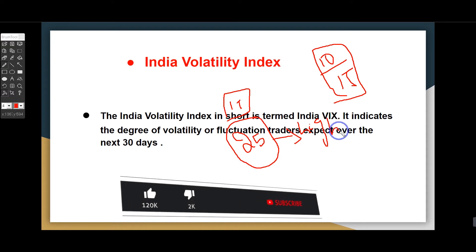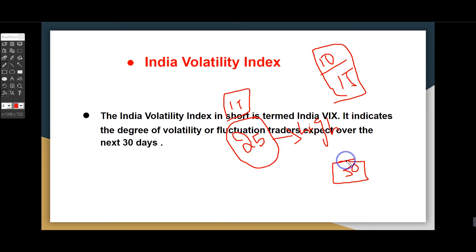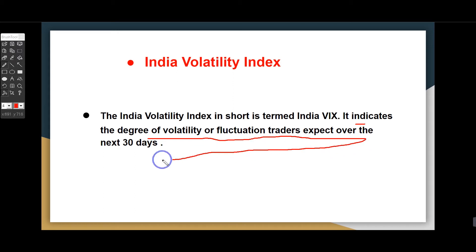In the range of about 25 to 35, if you move in the market, the volatility is high. It indicates the degree of volatility or fluctuation traders expect over the next 30 days.